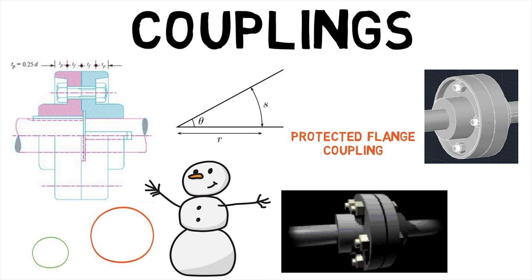It differs from unprotected and marine type flange couplings since its coupling bolts and nuts are protected by flanges on the two halves of the coupling.